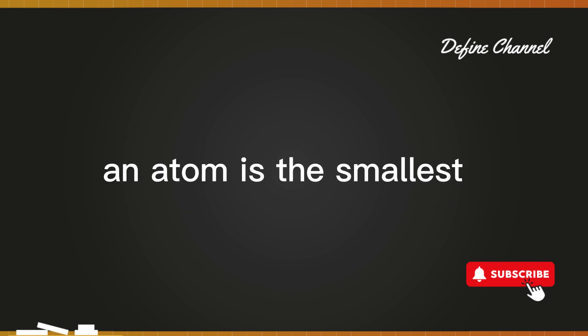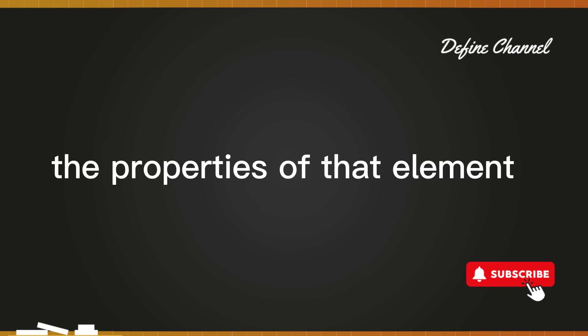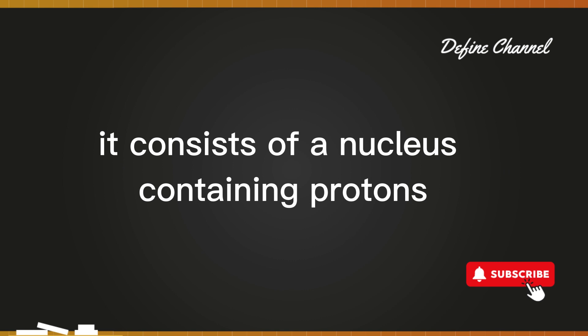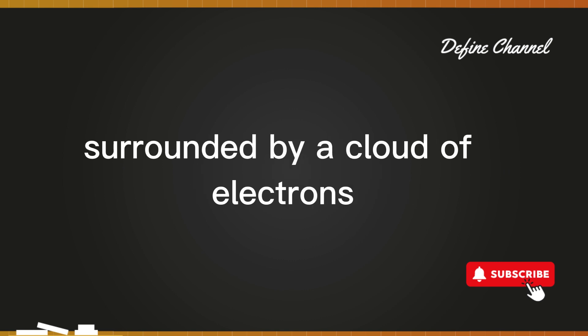What is an atom? An atom is the smallest unit of an element that retains the properties of that element. It consists of a nucleus containing protons and neutrons, surrounded by a cloud of electrons.